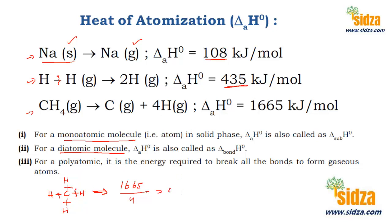So that comes to 416.25 kilojoules — the amount of heat required to break one carbon-hydrogen bond. This is the average bond dissociation energy of the carbon-hydrogen bond in methane. Hope you got the concept. Thanks for watching the video, bye for now.